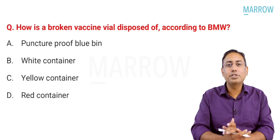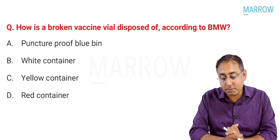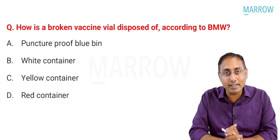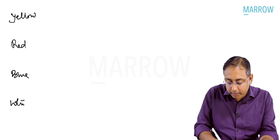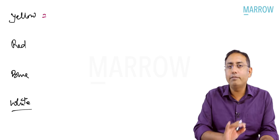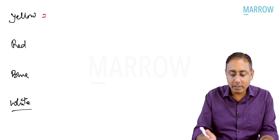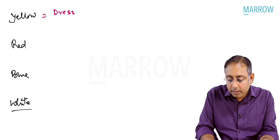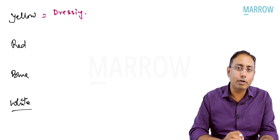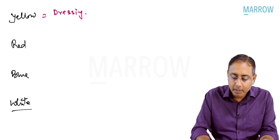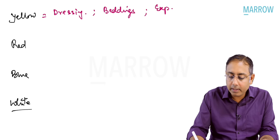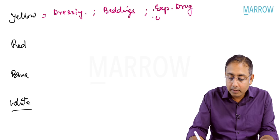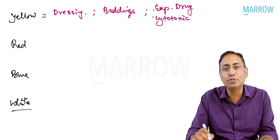Next MCQ: how is a broken vaccine vial disposed of according to Biomedical Waste 2016 guidelines? Yellow category includes infectious dressing material, beddings, expired drugs, cytotoxic waste, live unused/unopened vaccines, blood and blood products, and blood bags. These are frequently asked confusing MCQs.